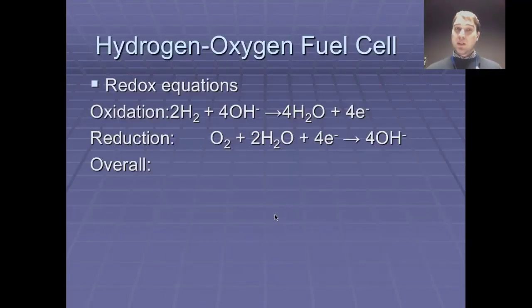So here's the redox equations for the hydrogen-oxygen fuel cell. So at the anode you get the hydrogen ions being oxidised. This hydroxide here, that's the potassium hydroxide, the electrolyte we were looking at before. So the hydrogen gas is oxidised and you get electrons being generated.